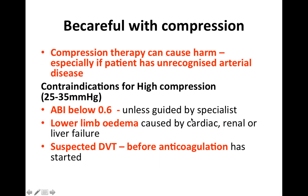Be careful with compression stockings as compression therapy can cause harm, especially if underlying arterial disease is not recognised. Contraindications for high compression at 25 to 35 mmHg include an ankle-brachial index below 0.6 unless guided by a specialist, lower limb oedema caused by cardiac, renal, or liver failure, and suspected deep vein thrombosis before anticoagulation. Applying compression stockings over a DVT may dislodge the thrombus, cause a saddle embolus, and essentially create a compartment syndrome-like situation.